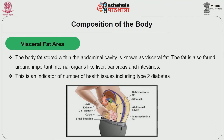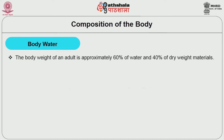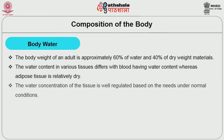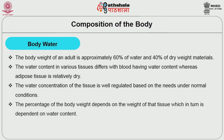Visceral Fat Area: The body fat stored within the abdominal cavity is known as visceral fat. The fat is also found around important internal organs like liver, pancreas and intestine. Visceral fat is an indicator of a number of health issues including type 2 diabetes. The body weight of an adult is approximately 60% water and 40% dry weight materials. The water content in various tissues differs, with blood having high water content whereas adipose tissue is relatively dry. The water concentration of the tissue is well regulated based on needs under normal conditions.